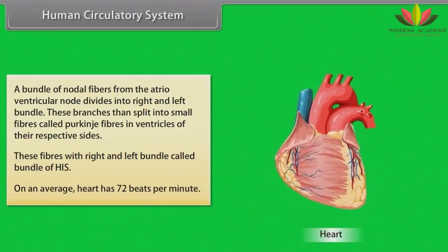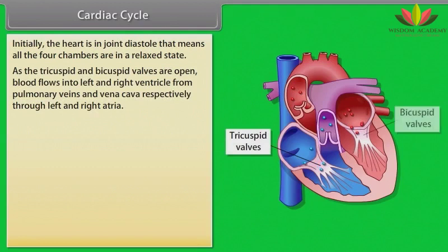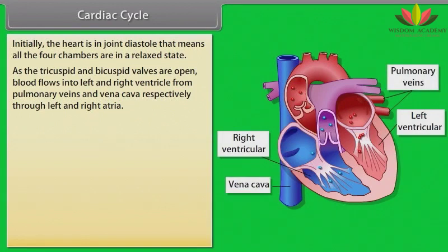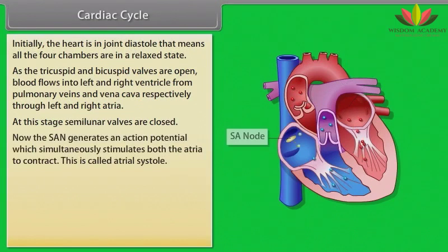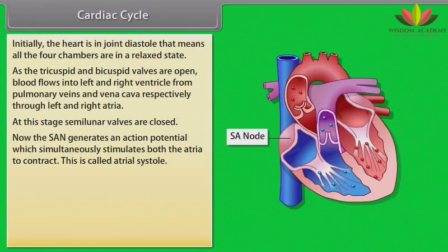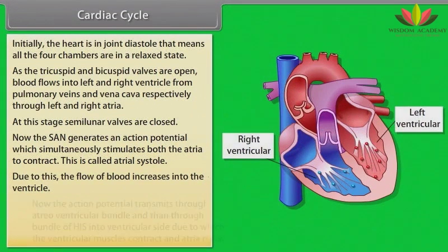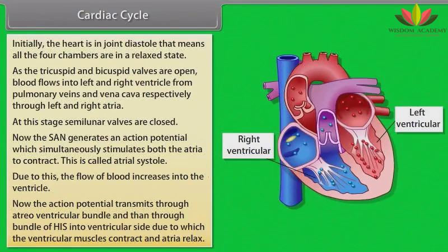Cardiac cycle. Initially, the heart is in joint diastole — all four chambers are in a relaxed state. The tricuspid and bicuspid valves are open, and blood flows from pulmonary veins and vena cava into the left and right ventricles through the left and right atria. The semilunar valves are closed. The SA node then generates an action potential that simultaneously stimulates both atria to contract — this is called atrial systole — increasing blood flow into the ventricles. The action potential then transmits through the AV bundle and bundle of HIS into the ventricular side, causing ventricular muscles to contract while the atria relax.